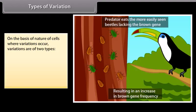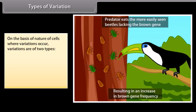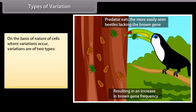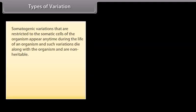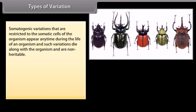On the basis of the nature of cells where variations occur, variations are of two types: somatogenic variations or acquired traits, and germinal or blastogenic variations. Somatogenic variations are restricted to the somatic cells of the organism, appear any time during the life of an organism, and such variations die along with the organism and are non-heritable.